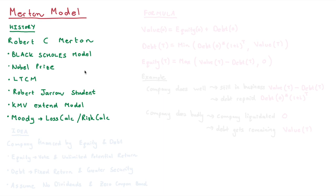Coming back to the Merton model, three people with the acronym KMV took this model and extended it. Moody's, a credit rating agency, then bought out that KMV model and used it in their proprietary models known as LossCalc and RiskCalc. So this model is very much a foundation for something that is used today.